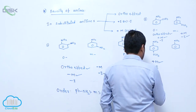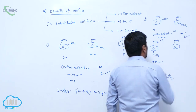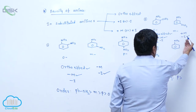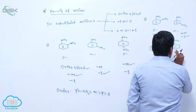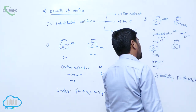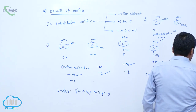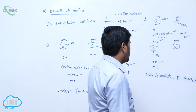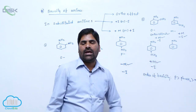The order of basicity of these anisidines: Para-Anisidine is the most basic. After para, here Ortho-Effect is more and minus-I effect is more for meta, but there is no substituent effect for aniline itself. So Aniline is more basic than Meta-Anisidine. Inductive effect is less when compared to Ortho-Effect, so Meta-Anisidine is more basic than Ortho-Anisidine. This is the order of basicity, considering one electron-withdrawing group and one electron-donating group.